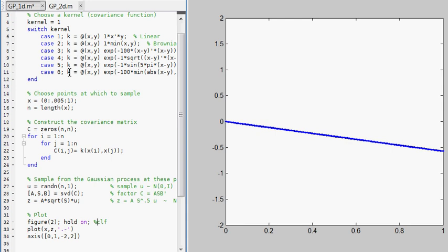It's very simple, and most of it is just setup. So most of it is choosing a kernel. We use the word kernel for covariance function also. And then choosing which points we're going to sample it at. And then we construct the covariance matrix for those points. And then this is the sampling here. This is really the only thing that's going on in sampling from a Gaussian process is this little hunk of code right here. And then we plot it.